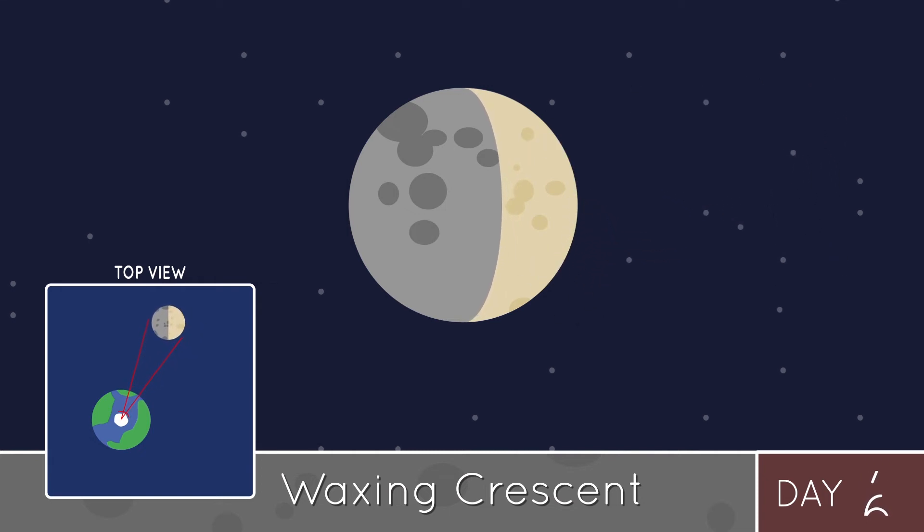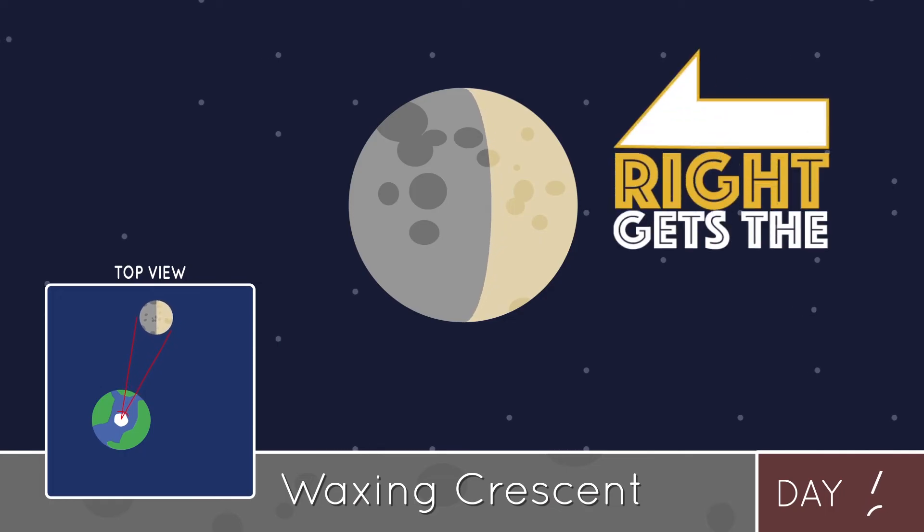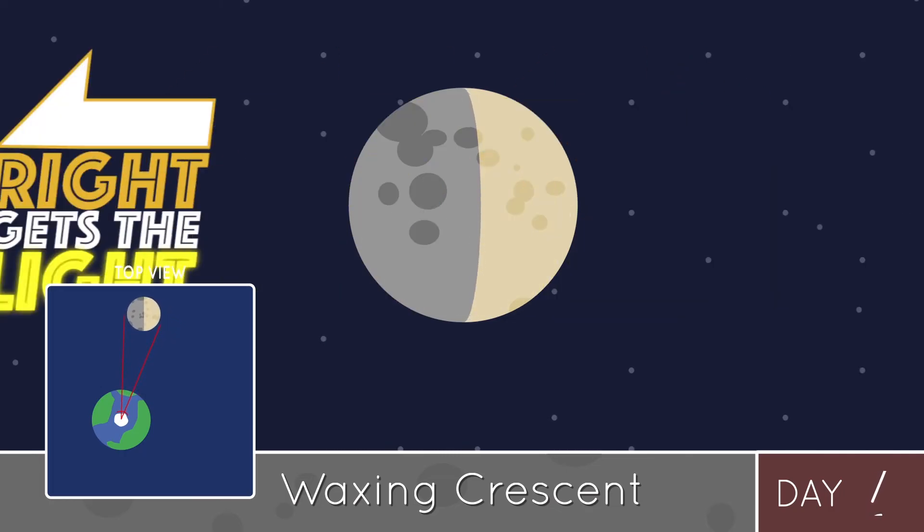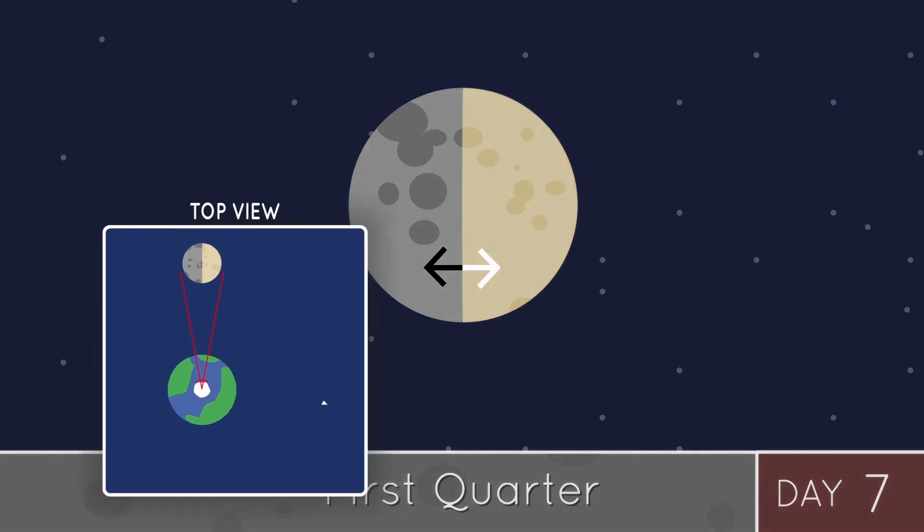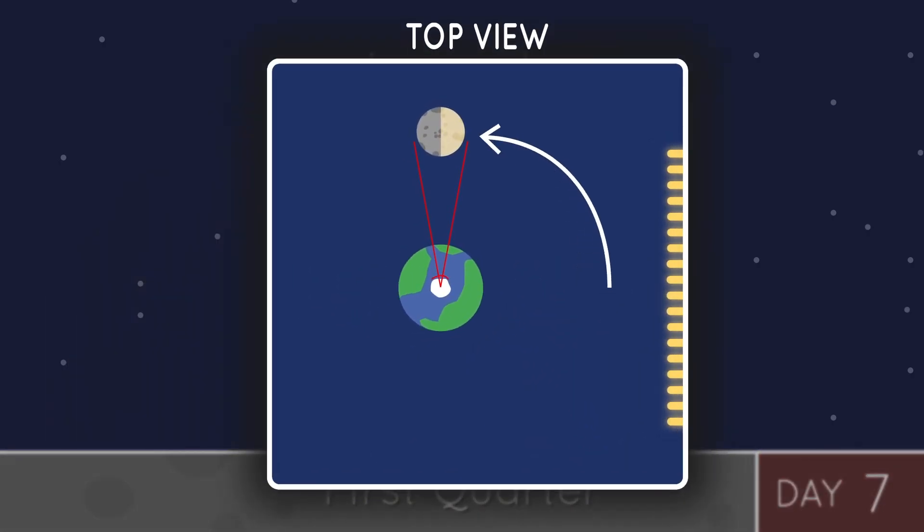Notice that the light enters from the right. Right gets the light, and as the light continues to grow, or wax on, we get to this point, where we see a perfect split of light and darkness. This is called the first quarter, because the moon is a quarter of the way through its orbit.